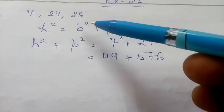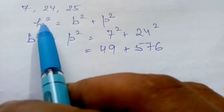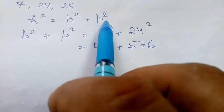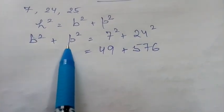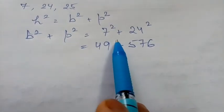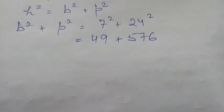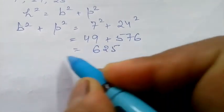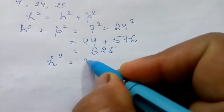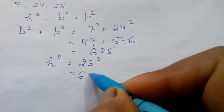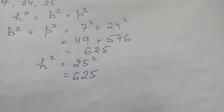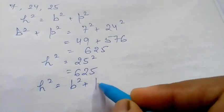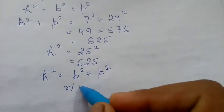For sides 7, 24, and 25, we know that in a right triangle, hypotenuse squared equals the sum of the squares of the other two sides — base and perpendicular. So: 7² + 24² = 49 + 576 = 625. And hypotenuse squared: 25² = 625. Since hypotenuse² = base² + perpendicular², it is confirmed as a right triangle.